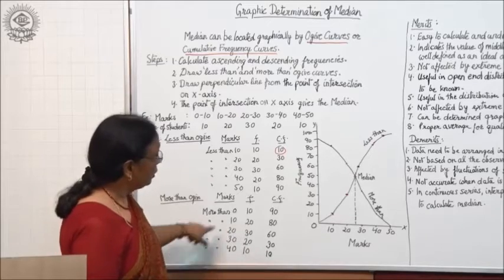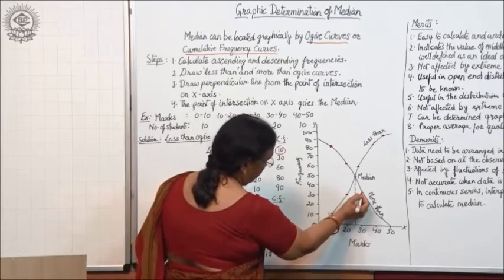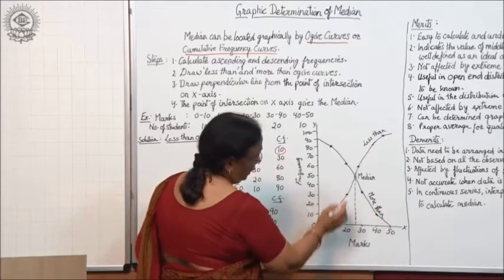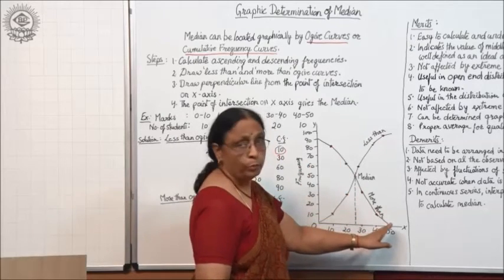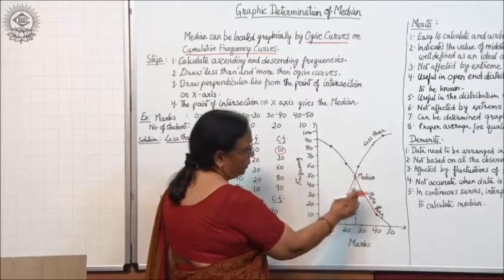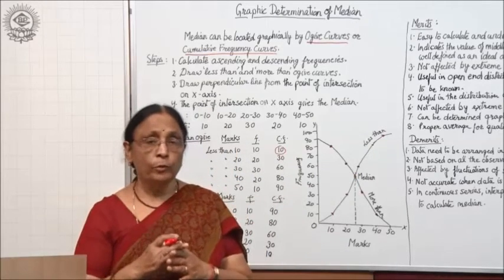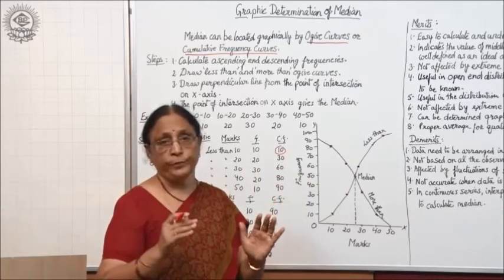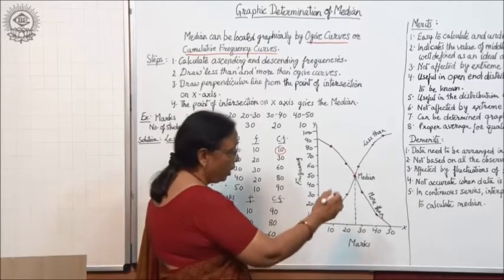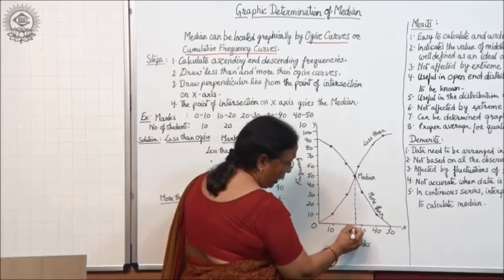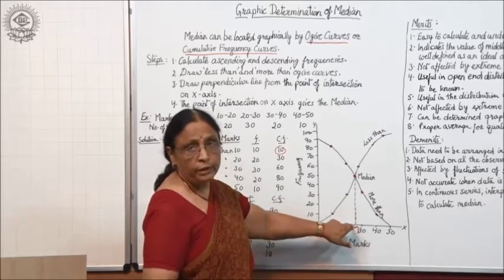Similarly, plot the more-than ogive. The first point is 90, the second is 80, the third is 60, the fourth is 30, and the last is 10, extending to the x-axis. Join these points to get the more-than ogive curve. You will find that the two curves intersect at exactly one point, because both move in opposite directions. From this intersection point, draw a perpendicular to the x-axis — that value is the median, which falls between 20 and 30.